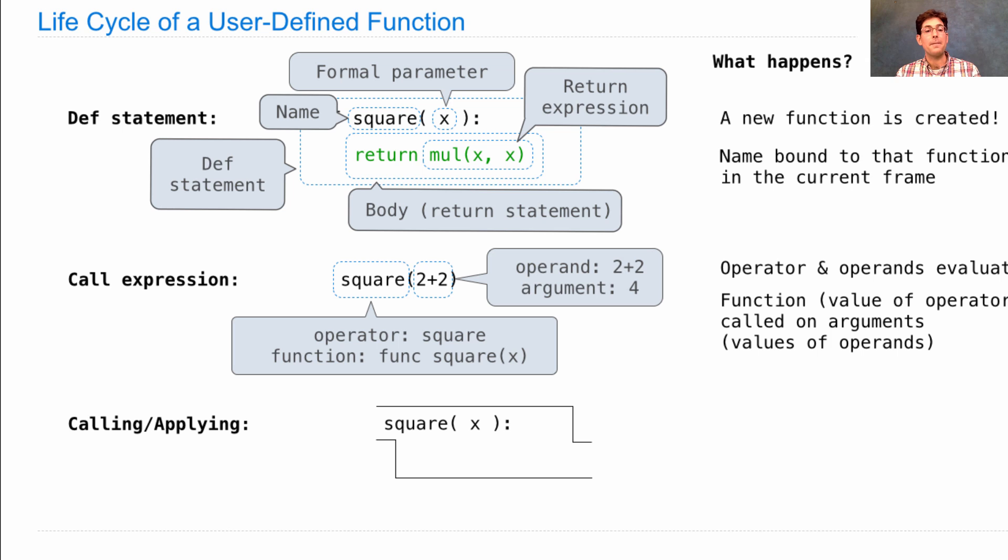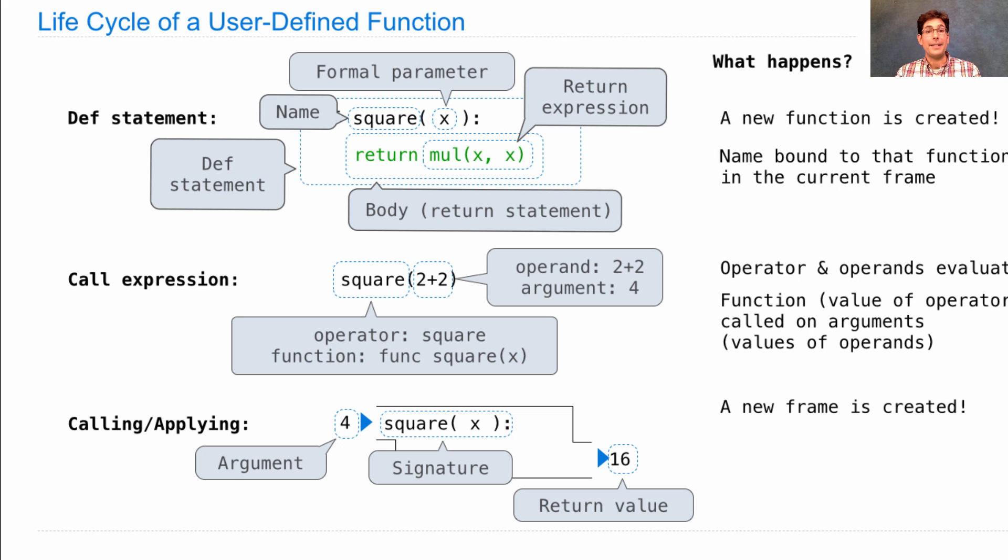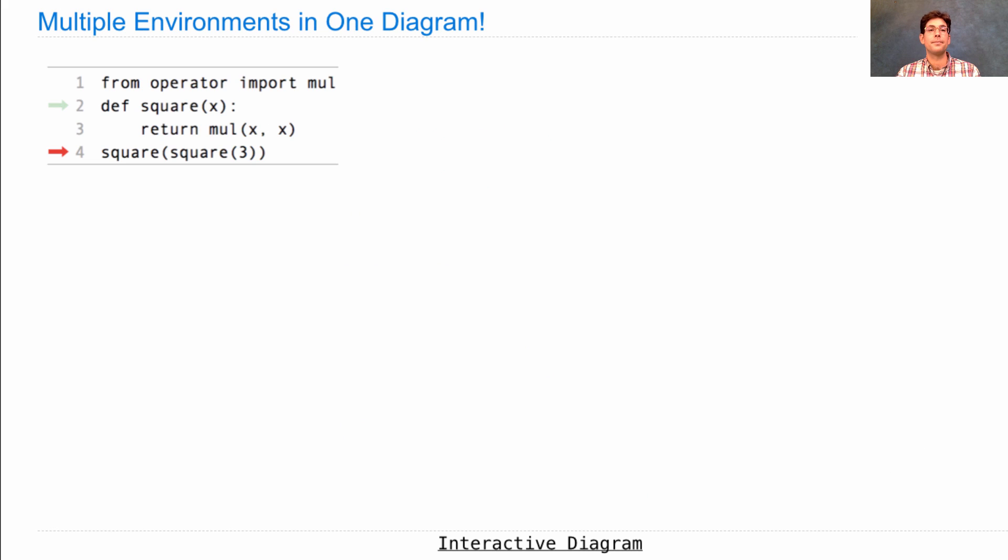Finally, there's a process of calling or applying that function, which we can draw using a diagram like this, which is the function signature inside of a little tube. We pass in an argument. We get out a return value. In order to compute the return value from the argument, there are several steps. First, we create a new frame. The parameters are bound to the arguments. So x is bound to four. Then the body is executed in that new environment, which means we actually do the multiplying of four times four to get 16.